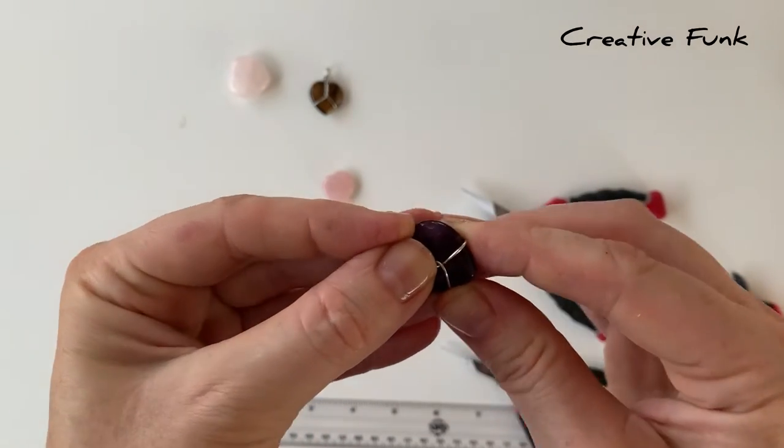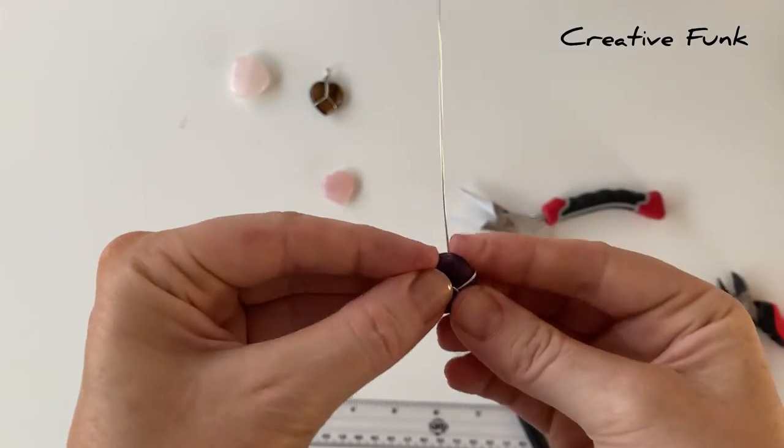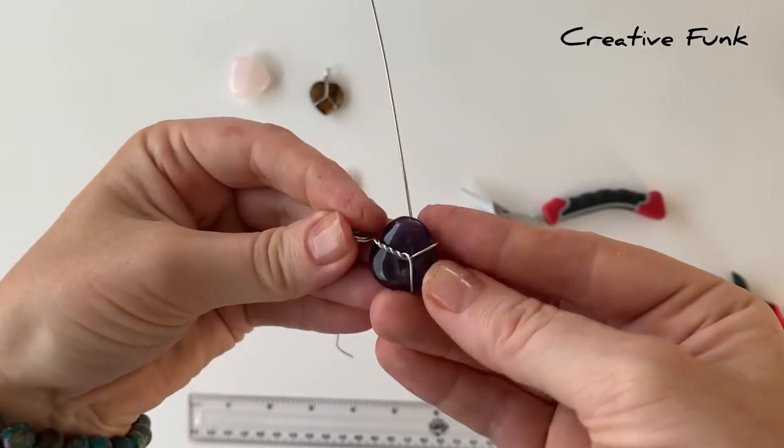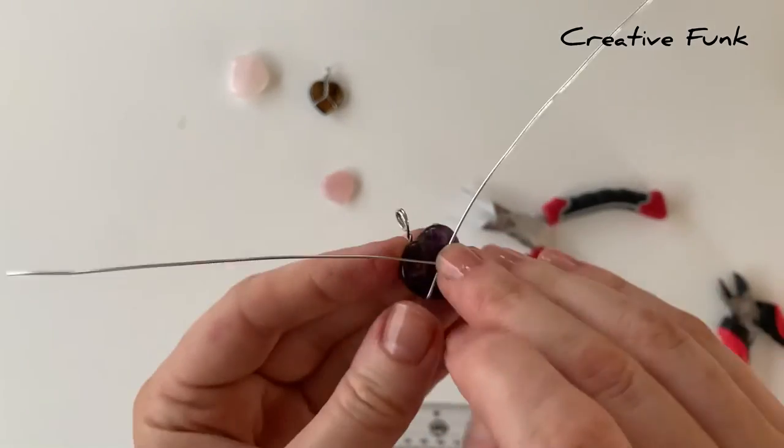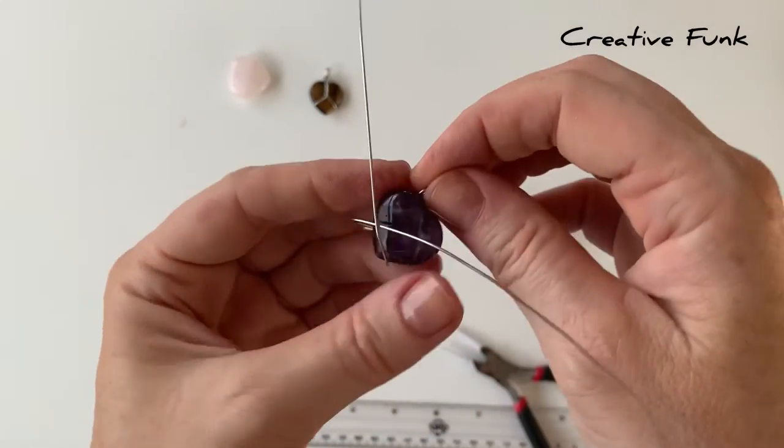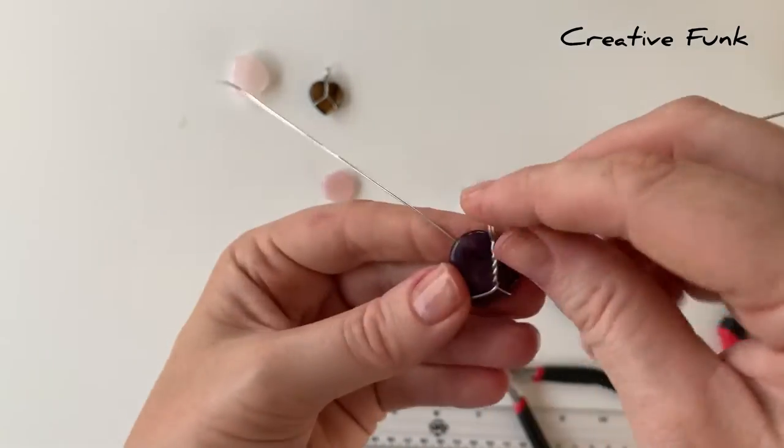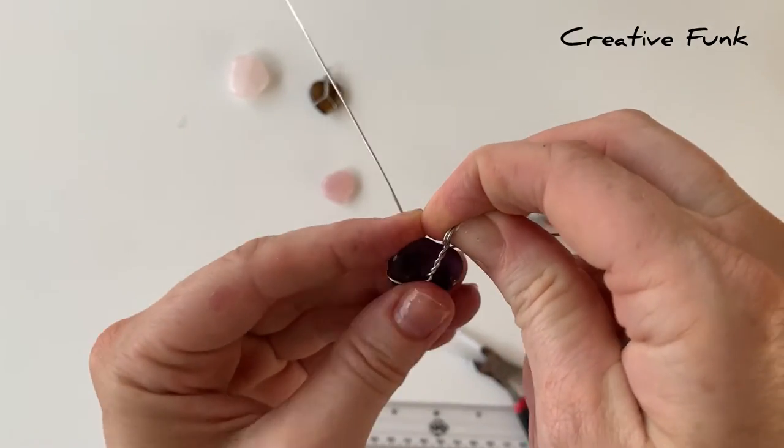Then we can just hold it onto the crystal there, and we're just going to fold each wire around the sides of the crystal there and onto the back of it. Just making sure that that bail is positioned in the center of the top there of your crystal.